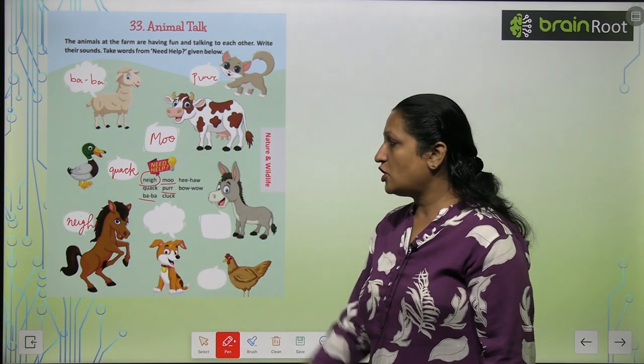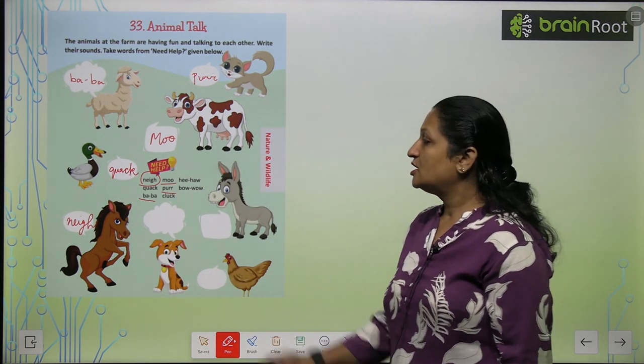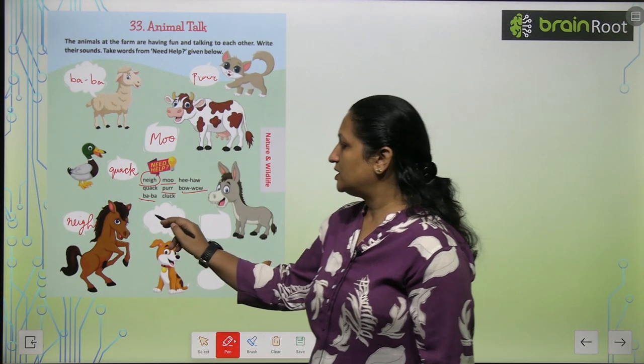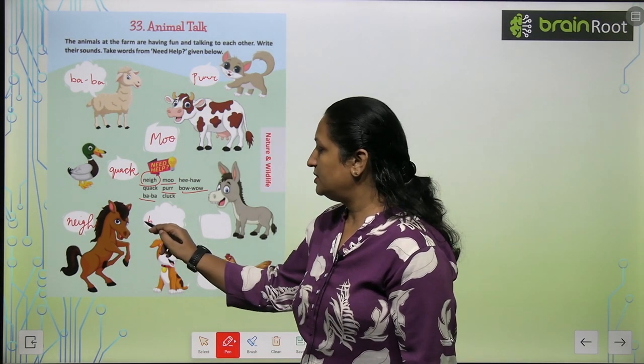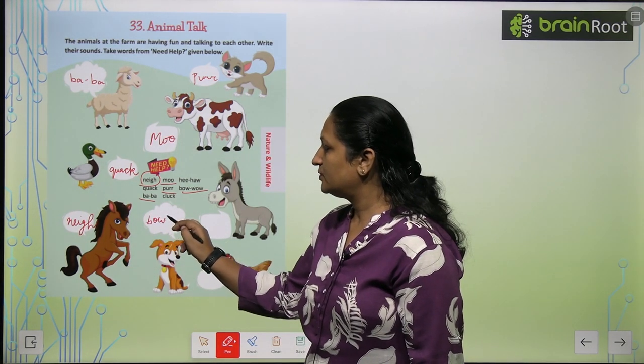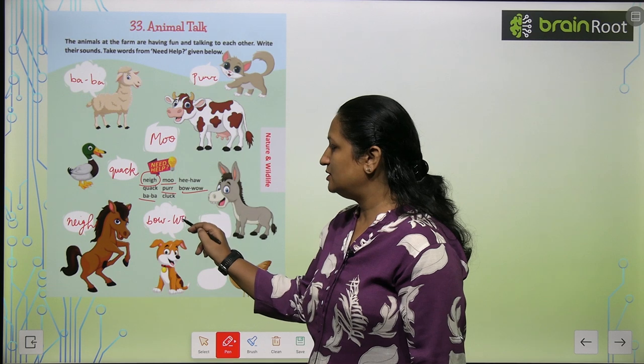This is a dog. Dog produces bow-wow. So you will write B-O-W, W-O-W.